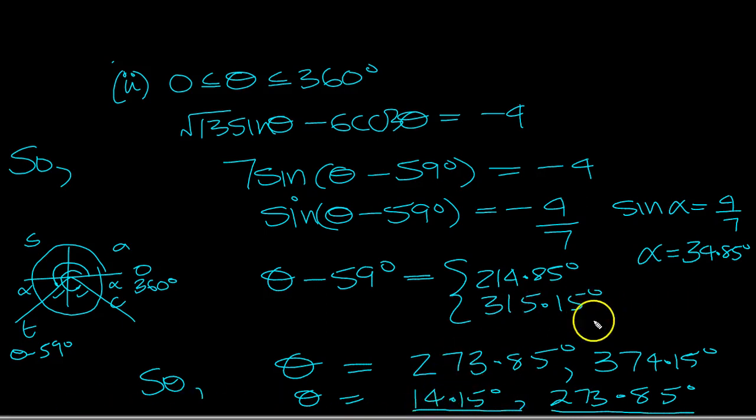Just one slight correction here, 360 minus 34 is not 315, it's 325, so apologies there. So that would be 384.15, and then this would be 283.85. So a little correction there from that silly mistake.